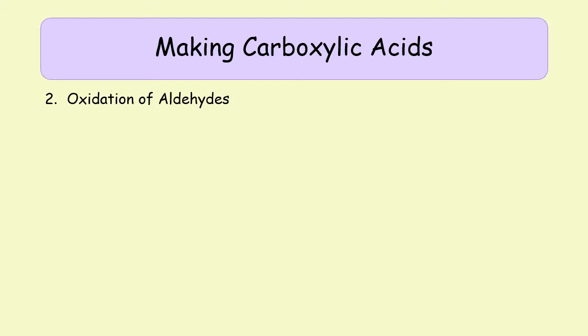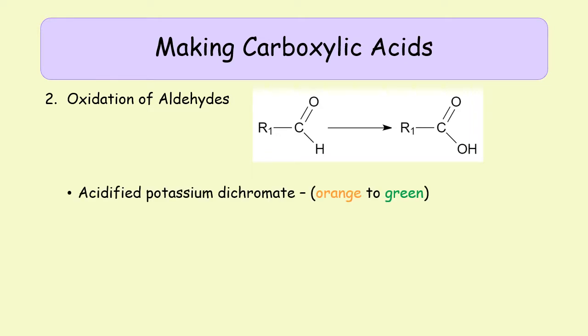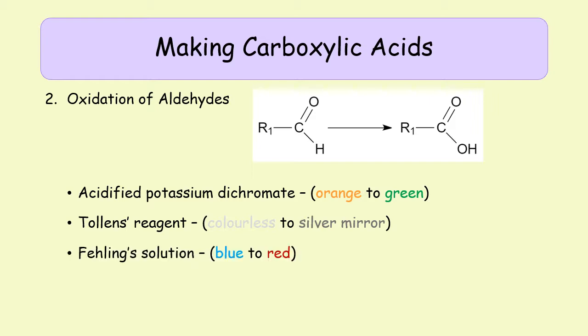The second route is to take an aldehyde and oxidize it directly, if you do not have a primary alcohol to start with — going from the aldehyde group to the carboxyl group. For this you can use acidified potassium dichromate (orange to green), Tollens' reagent (colorless to a silver mirror), Fehling's solution (blue to red), or acidified potassium permanganate or hot copper oxide as shown on the previous slide.